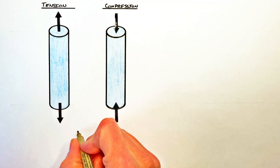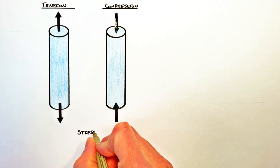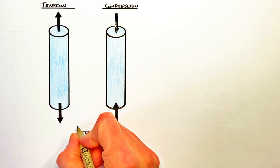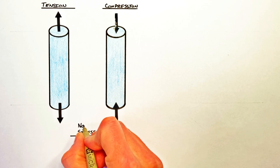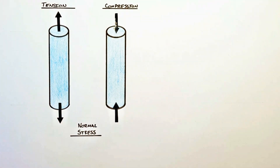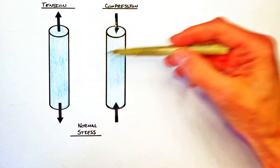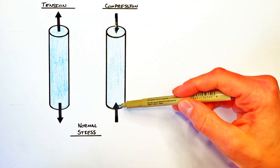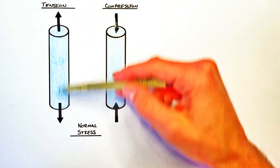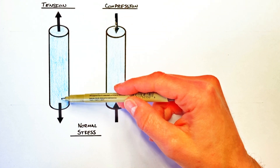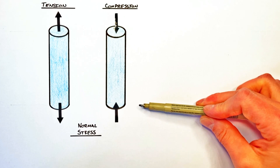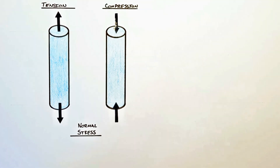Starting off with stress — there are lots of ways to stress a part, but today we're going to just look at what's called normal stress. Normal stress occurs any time we're either pulling or pushing on a part along the axis of that part. If we were to push sideways on a part, that would be what's called a shear stress, and that's an issue for another day.